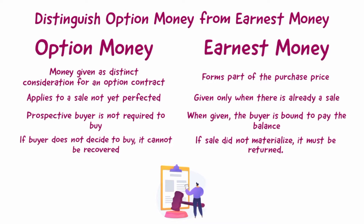Second, option money applies to a sale not yet perfected, while earnest money is given only when there is already a sale.